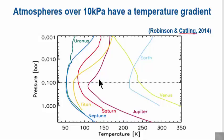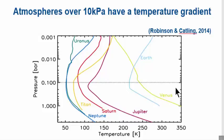That's what we've got here for all the planets: Uranus, Neptune, Titan, Saturn, Jupiter, Earth, and Venus. Mercury and Mars are not on here because their atmospheric surface pressure is too low.